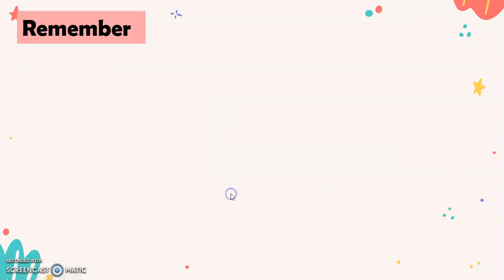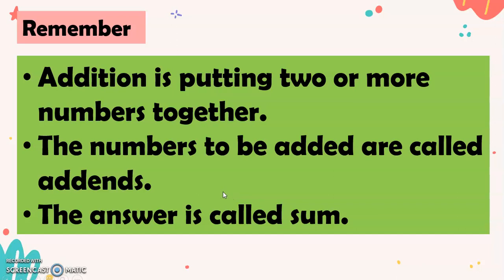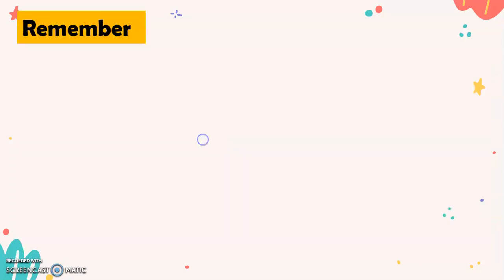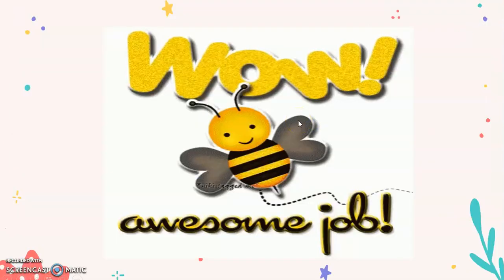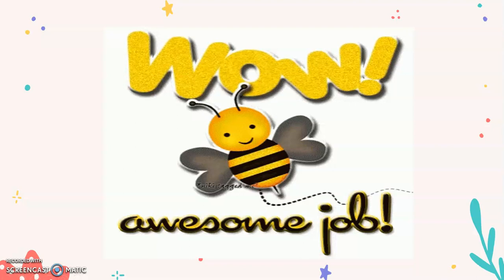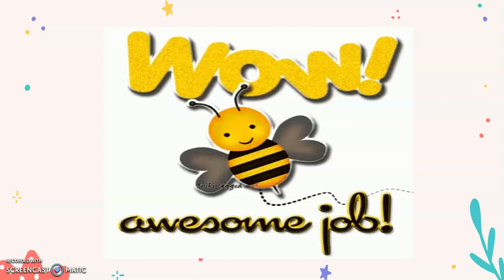Now, remember, addition is putting 2 or more numbers together. The numbers to be added are called addends. And the answer is called sum. And remember, there are properties of addition: identity property, commutative property, and associative property. Wow! Now, we already know the different properties of addition that we can use to add numbers so that we will have the sum of 18. Good job!